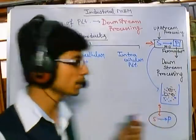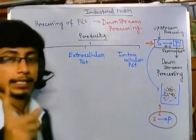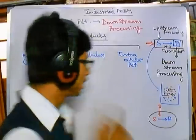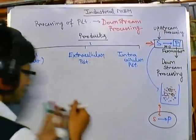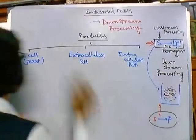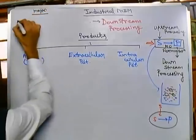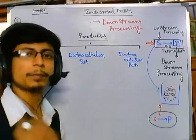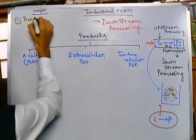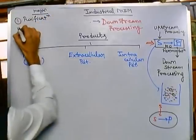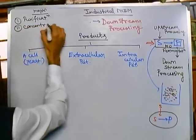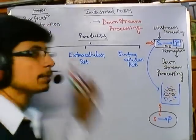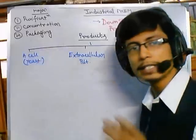Downstream processing has three major stages. The first stage is purification or isolation of the product. The second is concentration of the product. The third part is packaging of the product. These are the major three stages of any downstream processing event, and whatever downstream processing you see is either a modification or combination of these three phases.